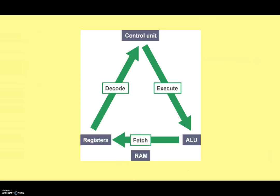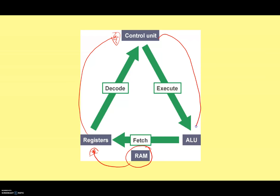If we look at a slightly more complicated diagram, you can see that when we fetch, we're taking instructions from the RAM. They get transferred through to the CPU where the instruction is held in the registers. We then take that instruction and put it through to the control unit, which decodes those instructions. Once the control unit has done that, we carry out the instruction using the ALU — the arithmetic logic unit — that does all the math and logical functions.